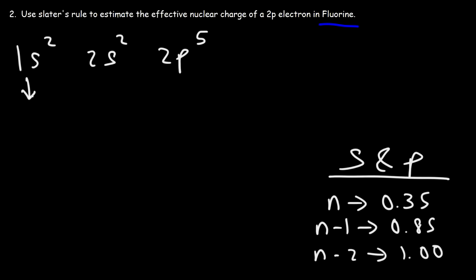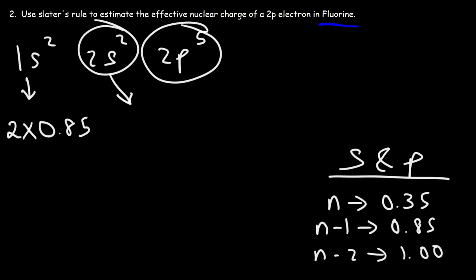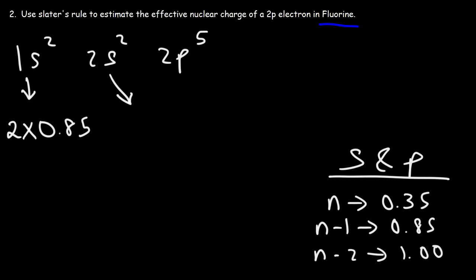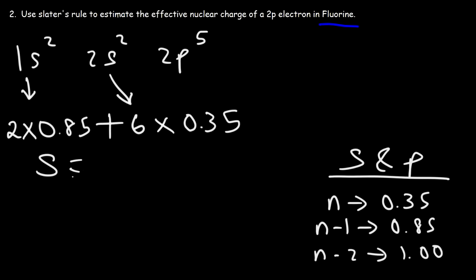For the 1s electrons, they're one group lower than the 2p electrons, so we give them a value of 0.85. There are two 1s electrons, so that's 2 times 0.85. For the 2s electrons, they're in the same energy level as the 2p electron. We have 2 from 2s and 4 from 2p5 — since we're analyzing one of the 2p electrons, the other four count. That's 6 electrons in the second energy level not including the one being analyzed, so 6 times 0.35. So we get 2 times 0.85 plus 6 times 0.35, giving an S value of 3.8.